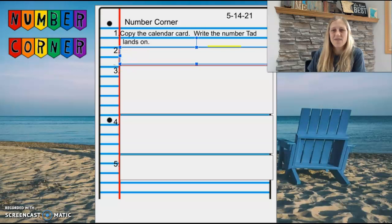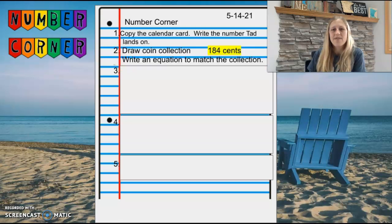We are moving on to number two. For number two today, you are going to draw a coin collection for 184 cents, or one dollar and eighty-four cents. You will also write an equation that matches your collection. Press pause if you need more time for number two.